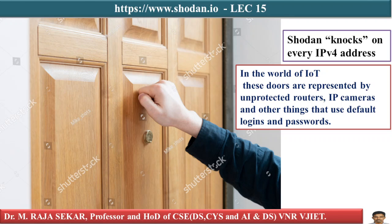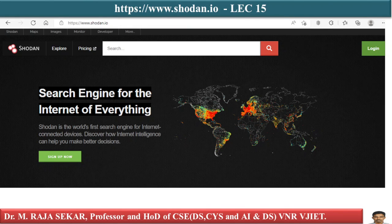In the world of Internet of Things, these doors are represented by unprotected routers, IP cameras, and other things that use default logins and passwords. Once you have managed to enter their web interface and figure out their login and password, you can gain full access to them. It is not rocket science since the information about default logins and passwords for different connected devices can usually be found on the websites of the manufacturers.